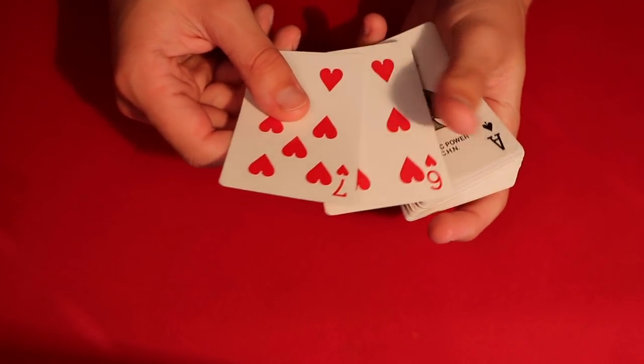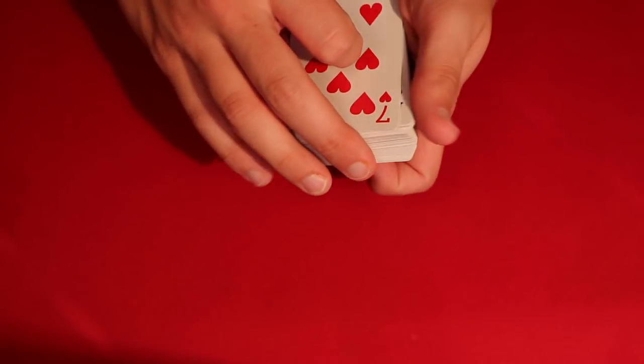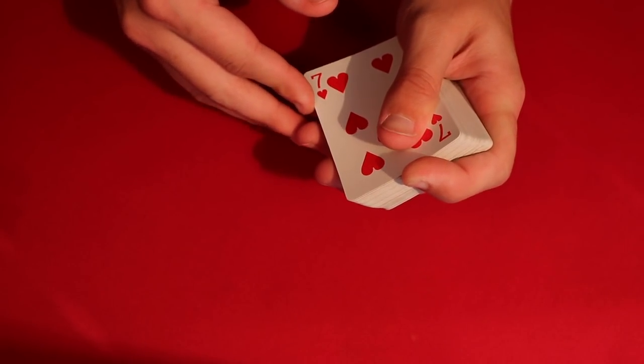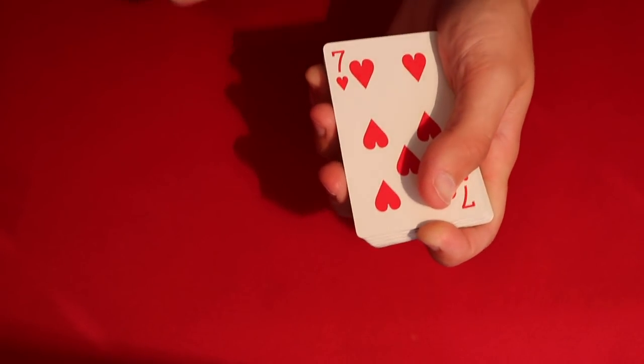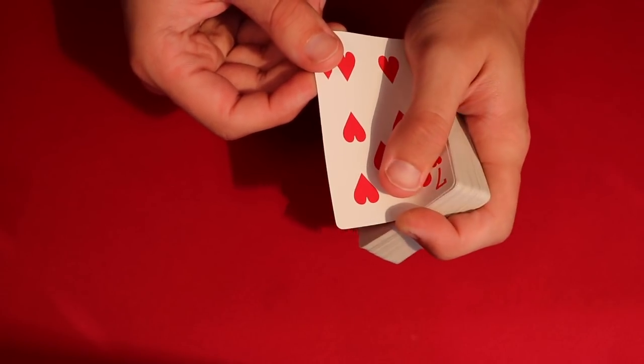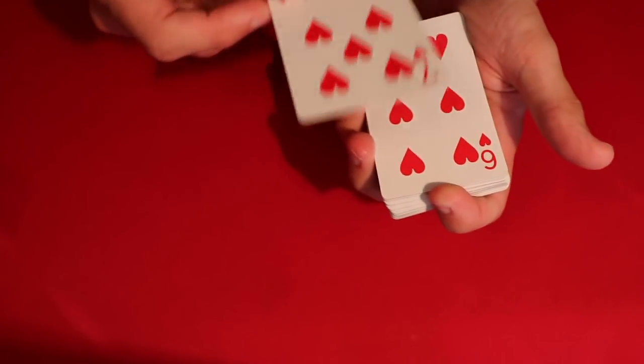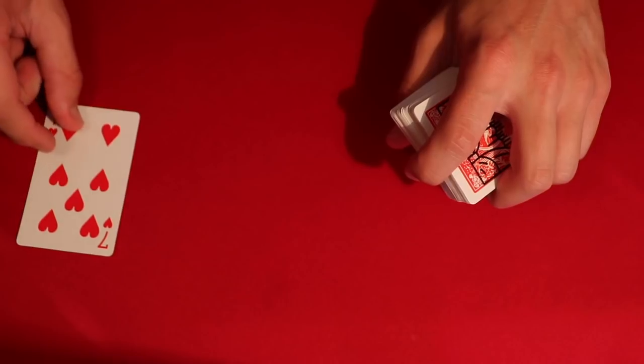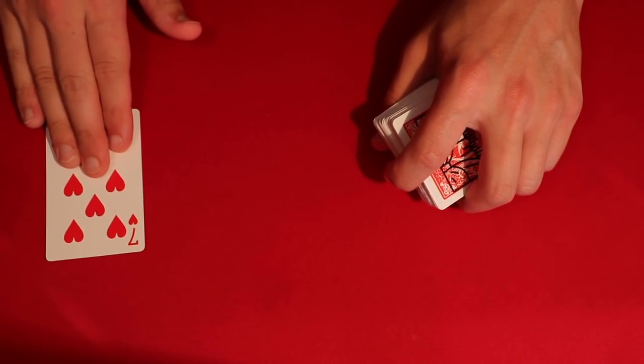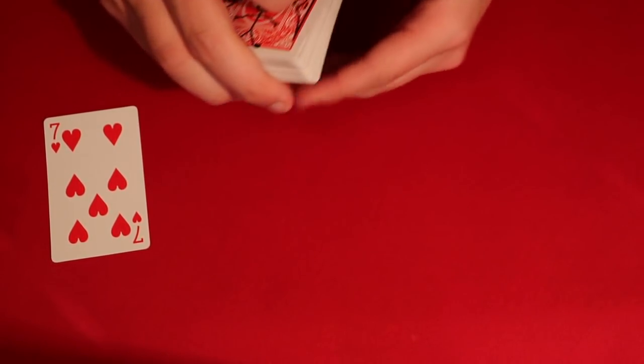So you have the seven and then the card below it as well. All you have to do is a super simple wrist kill. So you're gonna hold on to that seven and then pry away the card below it so they don't see that the bottom is changed. In this case you have the six of hearts there. The seven can go on the table so they can see it.